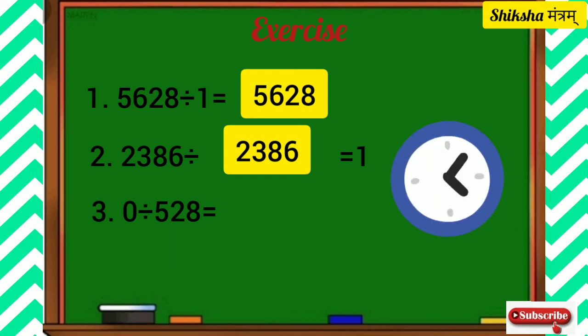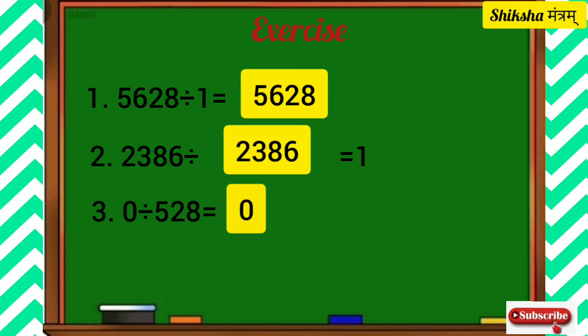Question number 3: 0 divided by 528 is equal to? The correct answer is 0, because when 0 is divided by any number except 0, the quotient is always 0.